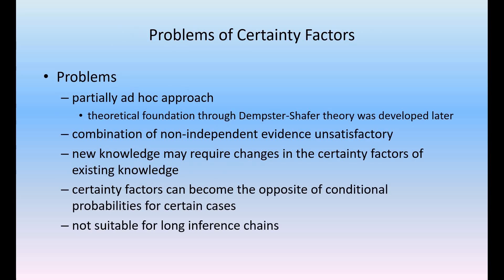The negative aspects of certainty factor rules: combination of non-independent evidence is unsatisfactory, not suitable for long inference chains, and certainty factors can become the opposite of conditional probabilities for certain cases. New knowledge may require changes in the certainty factors of existing knowledge. It is a highly ad-hoc approach, not suitable for long inference chains, and completely opposite to base conditional probability rules.